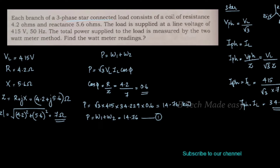IPH is equal to VPH divided by Z, and VPH equals VL divided by √3, so IPH equals VL divided by (√3 · Z).